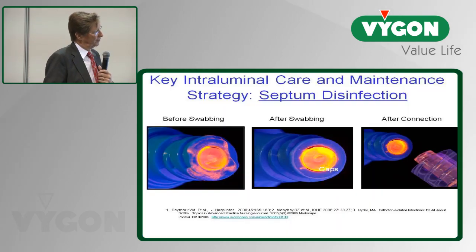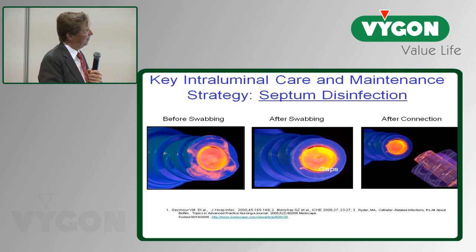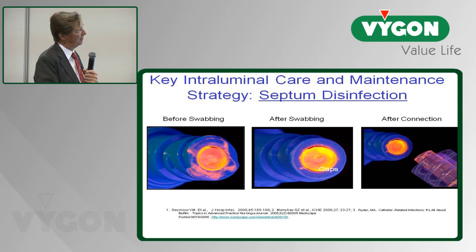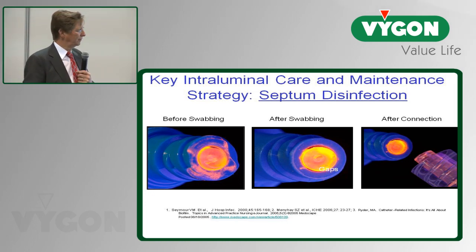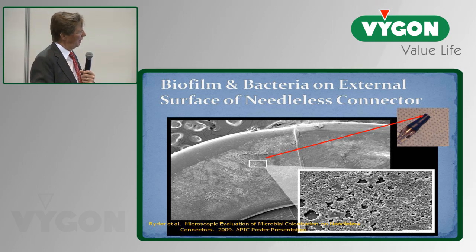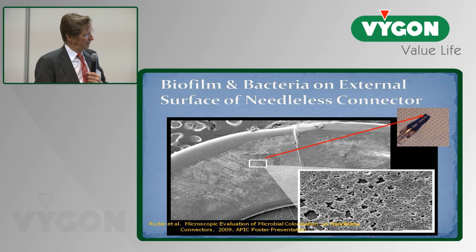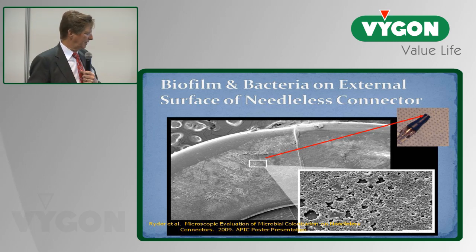This is a visual illustration of the issue we're dealing with. We put glow germ on a needleless connector, and after swabbing, you can still see the fluorescent dye there. In fact, if you then connect a syringe, you see the fluorescent dye is transferred to that syringe. So if you have contamination and haven't adequately disinfected that connector, you're going to transmit those pathogens. An electron micrograph shows the external surface of one of these connectors with large numbers of bacteria.